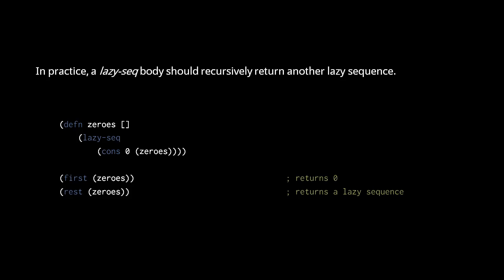When we call zeros, it returns a lazySeq, and when we invoke first or rest on that lazySeq, the body of the lazySeq runs, generating a cons. First and rest called on the lazySeq returns the first and rest of this cons.